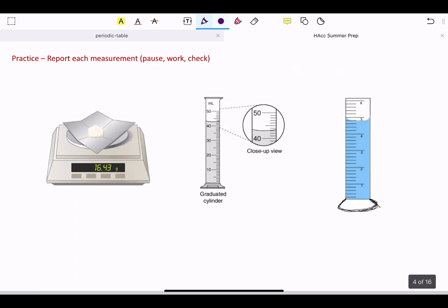So now what you'll do is you will do your own practice. What that means is that every time we get to a practice slide, you will pause the video, work the problems, and then check them by pushing play again to see what the answers are. So push pause, work them, and then push play to see the answers. All you're doing here is reporting each measurement to the right number of places.